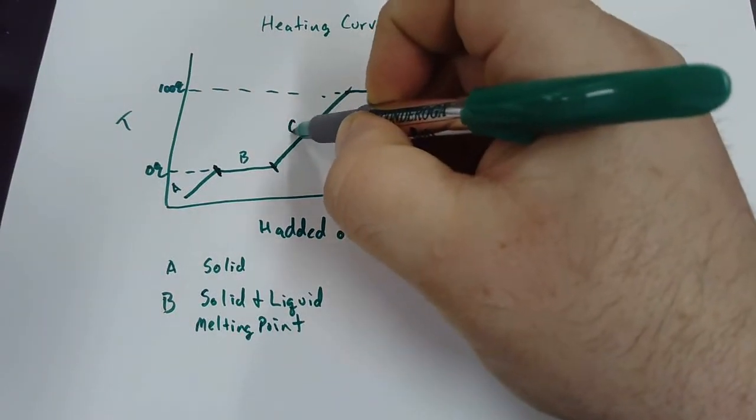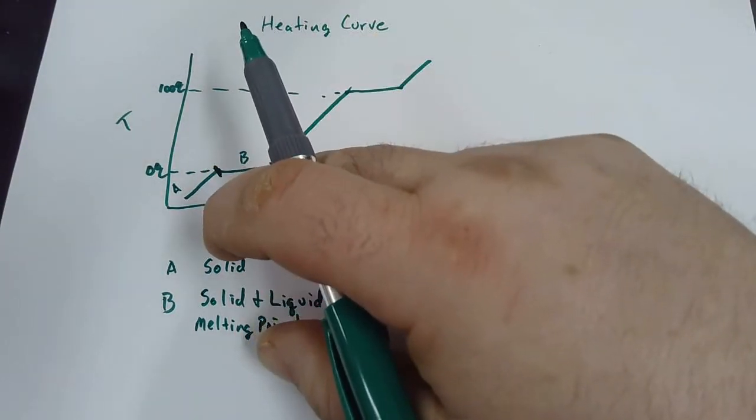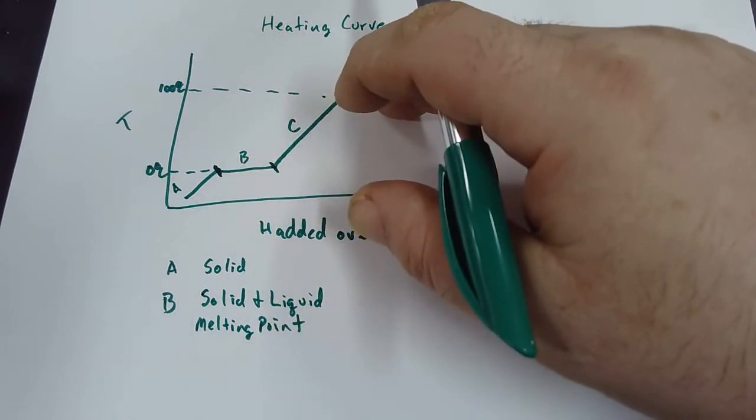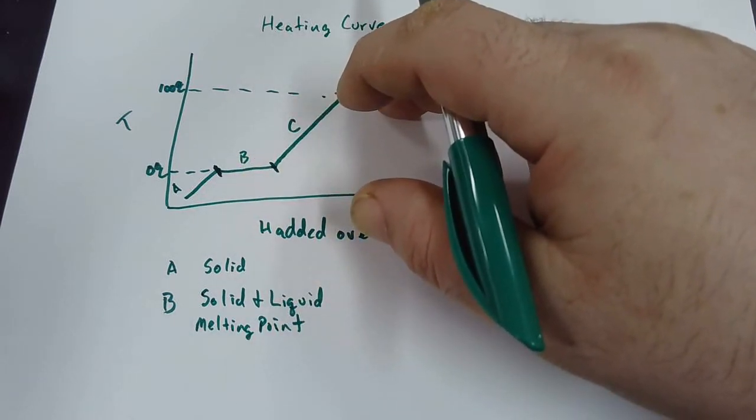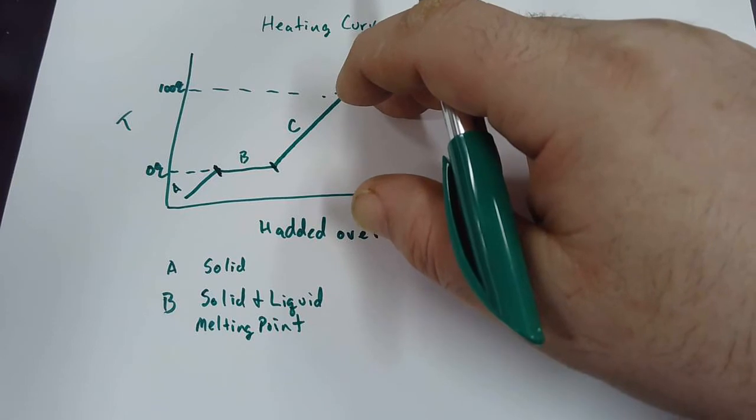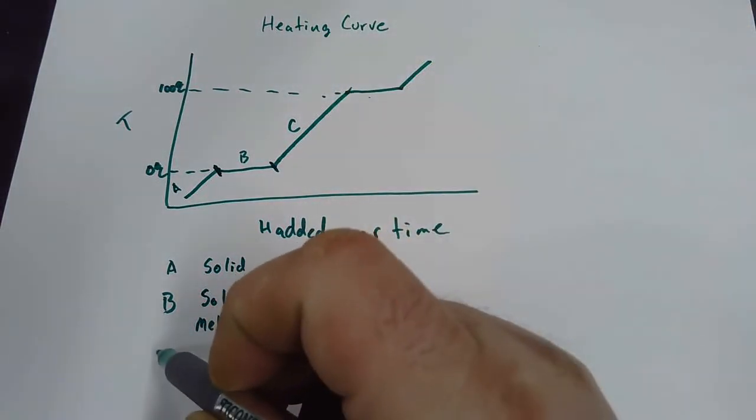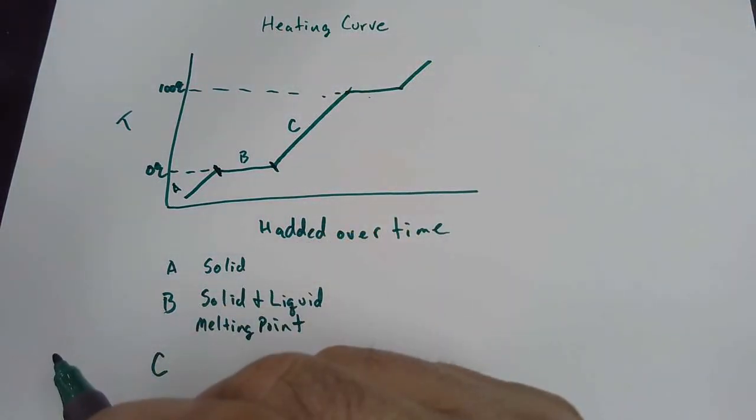Then we get over here to C. We're all liquid and now what we're doing? We're getting hotter. What's the highest temperature that water is going to get to? It's going to get to 100 degrees.